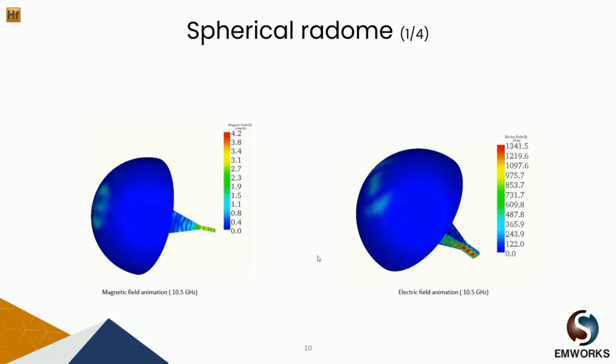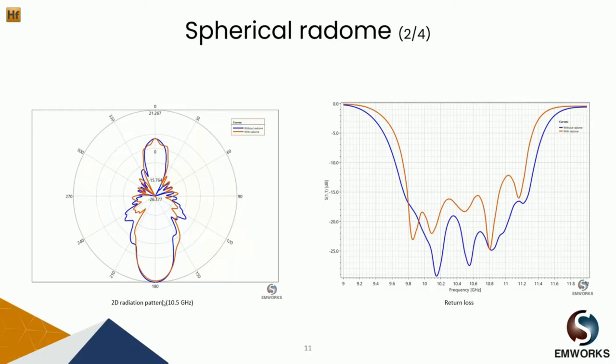Let's start with the spherical radome. On the right we can see an electric field animation, and on the left we have a magnetic field animation. When designing an antenna, one of the most important parameters to look at is of course the return loss. Looking at the graph on the right, we can see that placing the antenna under a radome results in an increase in return loss, and this is mainly due to the reflection from the different layers of the radome.